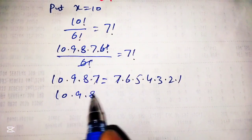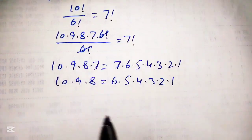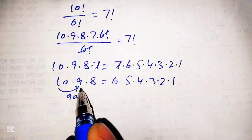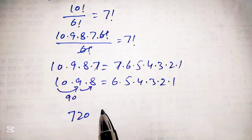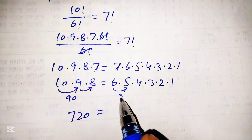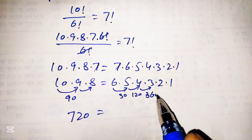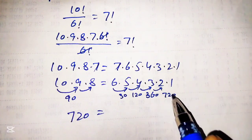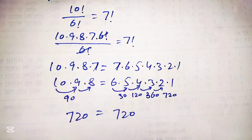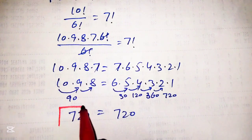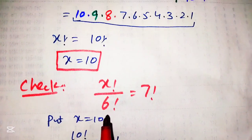We are left with 10 into 9 into 8 is equal to 6 into 5 into 4 into 3 into 2 into 1. Now, 10 into 9 is 90, and 90 into 8 is 720. On the right side, 6 into 5 is 30, 30 into 4 is 120, 120 into 3 is 360, 360 into 2 is 720, and 720 into 1 is 720. So 720 equals 720, and the answer is verified. Therefore x equals 10 is the verified solution.